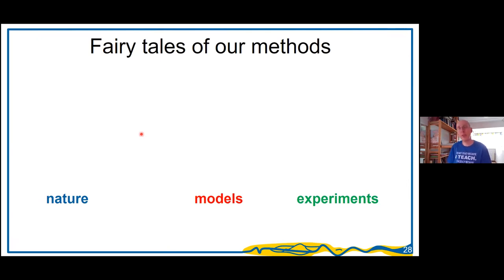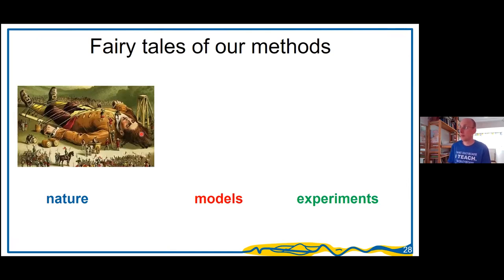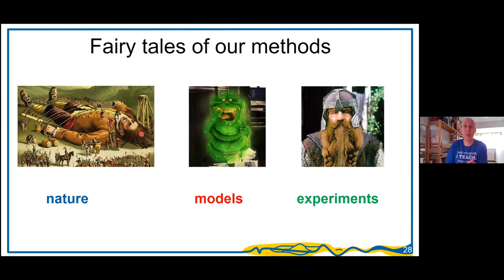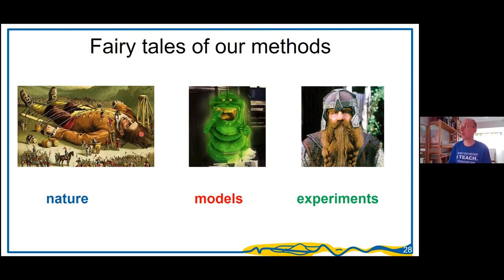So far I've talked about inferences from nature — from the complex planet we're trying to study — which is a dangerous inference involving statistics. I've also talked about experiments, which are miniature controlled bits of the planet that can differ from the real world in significant ways. They are complementary and provide better control of conditions, but are limited in what they can tell us. A third way is numerical models, which are virtual but allow complete control over which laws of physics and biology we put in. I'll also show how the idea of inner bank stability works with models.